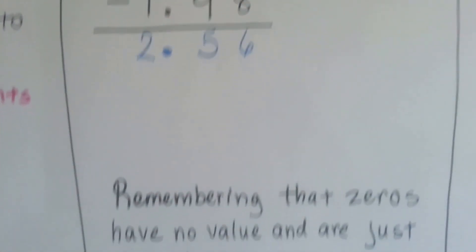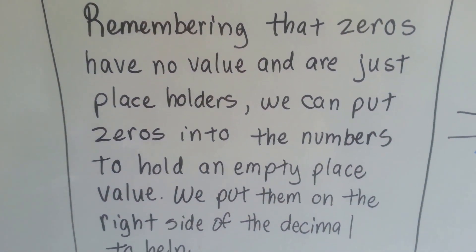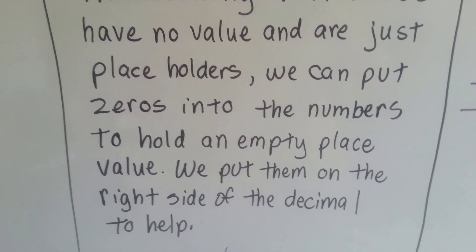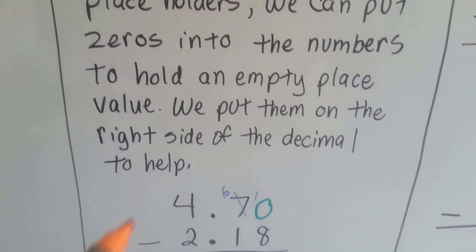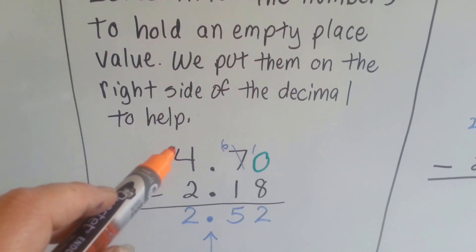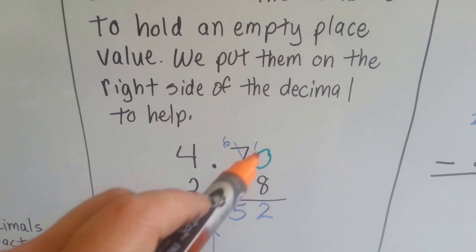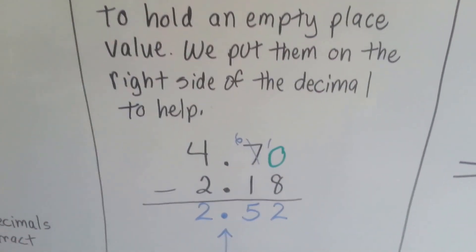Keep them perfect. Now remembering that zeros have no value and are just placeholders. We can put zeros into the numbers to hold an empty place value. We put them on the right side of the decimal to help. So if we had 4 and 7 tenths and had to take away 2 and 18 hundredths, we could put a zero on the far right side so that we could do our subtraction.